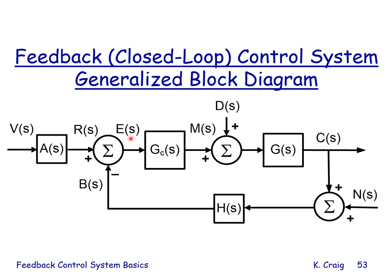R minus B, the reference input minus the feedback signal, as shown by the summing junction, results in signal E, the actuating signal. It is not the error — the error is V minus C. E equals the error only when A (the reference input element) equals 1 and H (the feedback element) equals 1. This block diagram represents the generalized feedback control system where elements in the blocks are transfer functions — the mathematical representation of the actual hardware elements — and arrows represent signals between those elements.